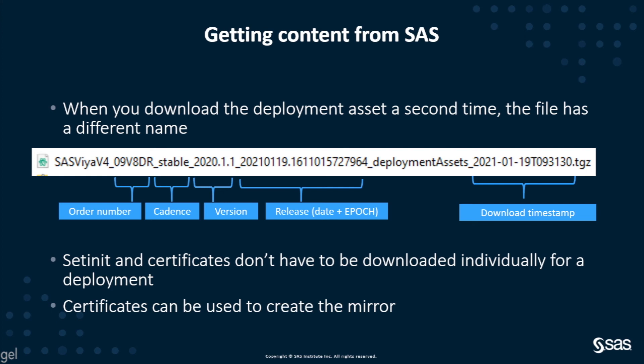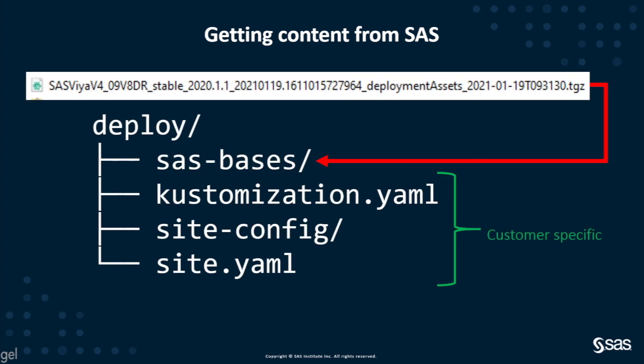The license and certificates don't have to be downloaded individually for a fresh deployment — you don't need them for that. You might need the license file to renew the license, and the certificates can be used to create the mirror. When you unzip the deployment asset, it will create the SAS-based directory with a lot of content.